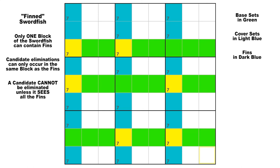But what happens if there is an additional candidate 7 in one of the base sets that is not contained in one of the cover sets, the presence of which messes up this otherwise perfect swordfish? Let's say there is an extra candidate 7 here in row 3, column 5. Now you cannot treat this as a basic swordfish anymore because it doesn't qualify according to normal fish rules. The cover sets do not cover or contain all the base candidates now.